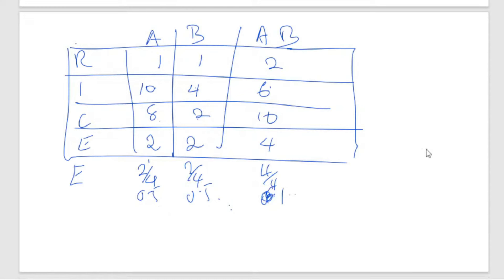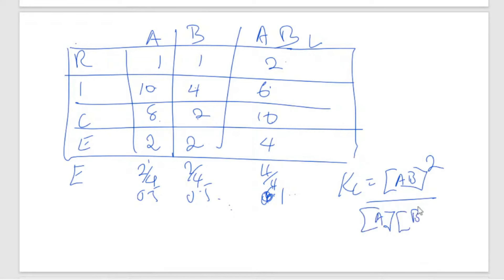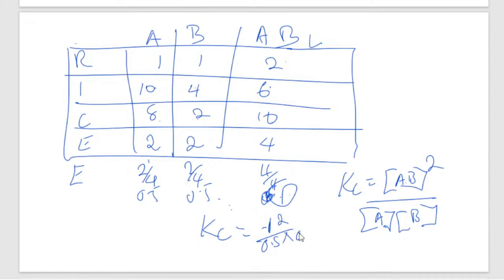Now, Kc equals the concentration of AB squared — because there are 2 moles — over the concentration of A times the concentration of B. So Kc = (1)² divided by (0.5 × 0.5) = 1 divided by 0.25, which gives Kc = 4.